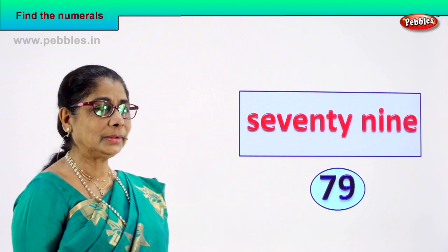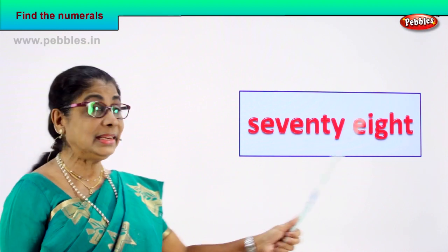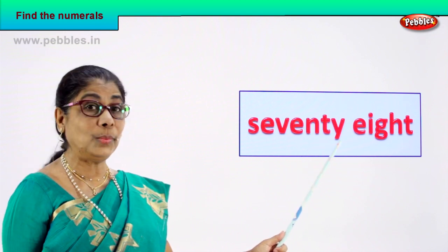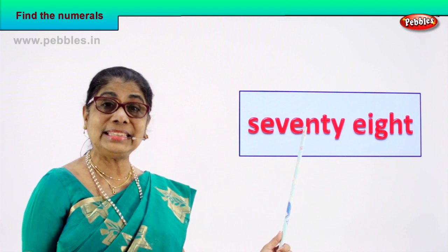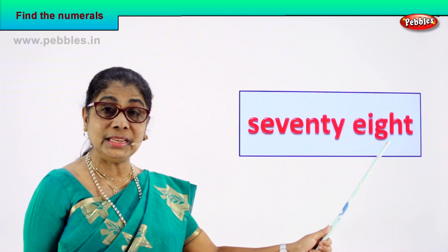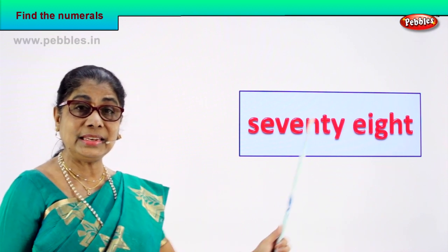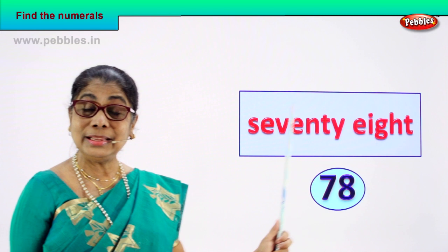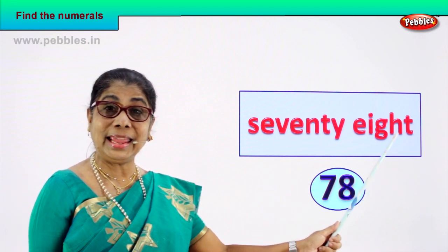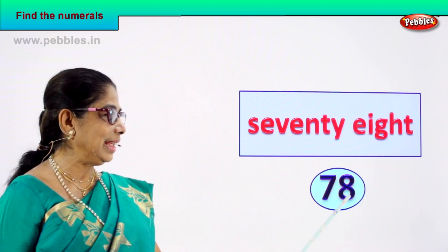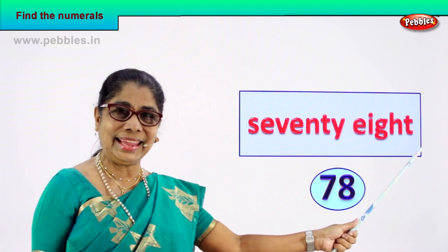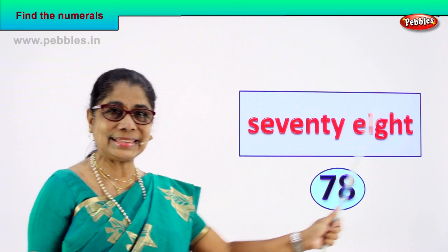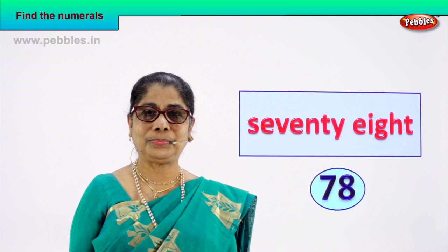Let's take another number name. Look. Spell: S-E-V-E-N-T-Y, 70. E-I-G-H-T, 8. 78. You can read it as 78. How do we write the numeral? You know 70, you know 8 — seven and eight, 78. You learn the spelling and you learn to write down the numeral: 7 and 8, 78.